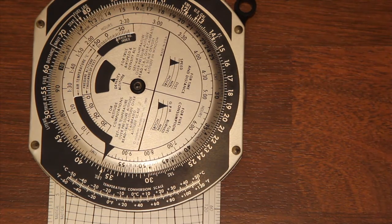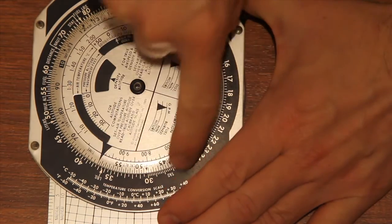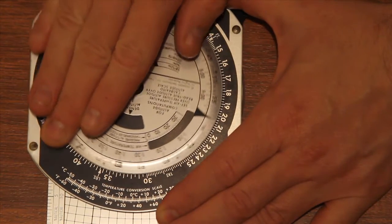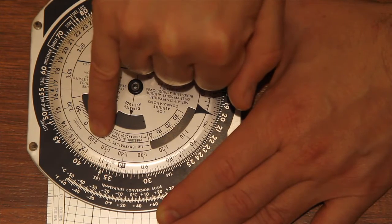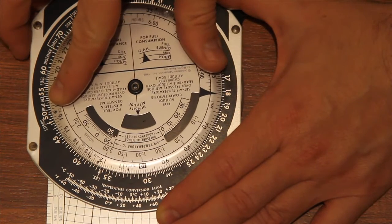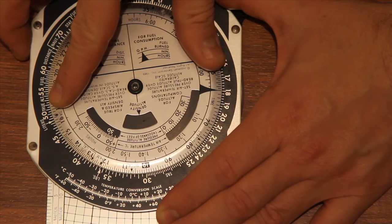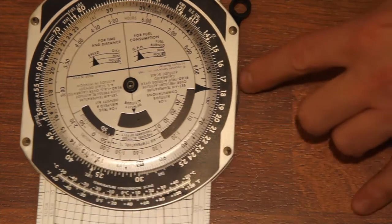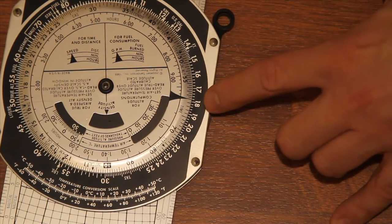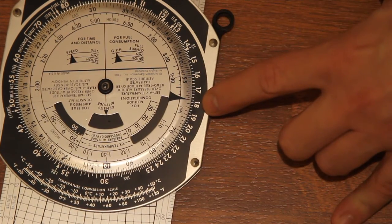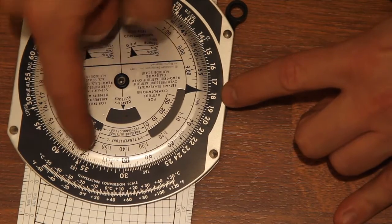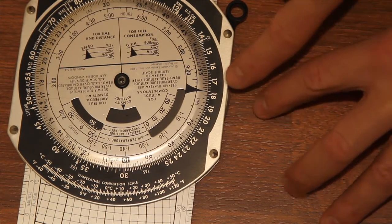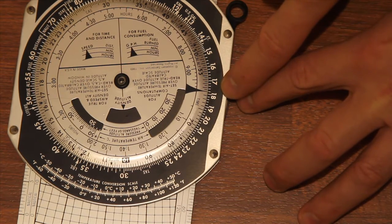What you can also do with the E6B is you can take 360 on this outer scale, so 36, and you can take your two-hour scale on the inner circle, match the two up like that, and then over here you can read it off on the outer scale where the arrow points. You can see that 360 kilometers taking two hours, you will travel at 180 kilometers per hour.